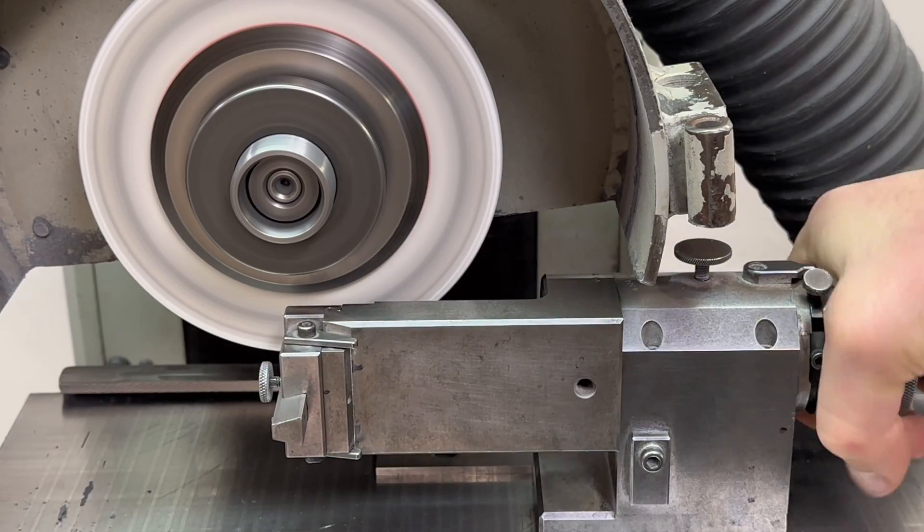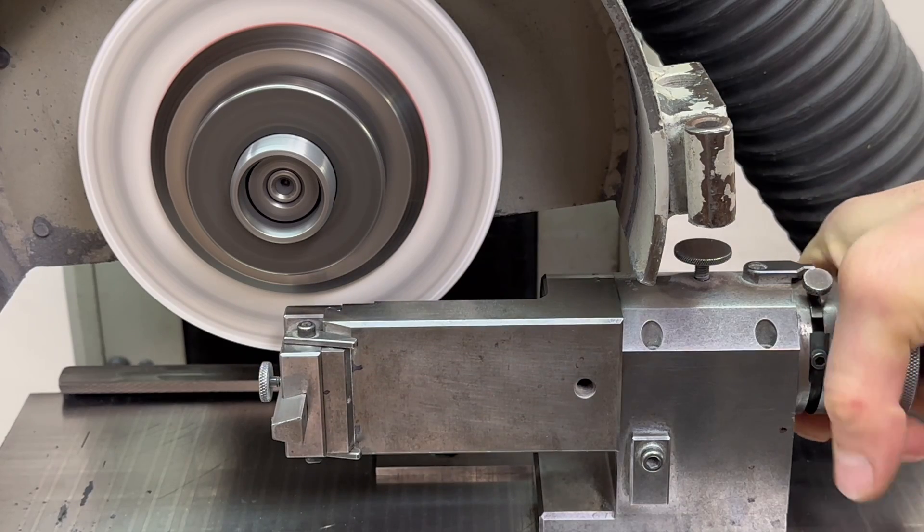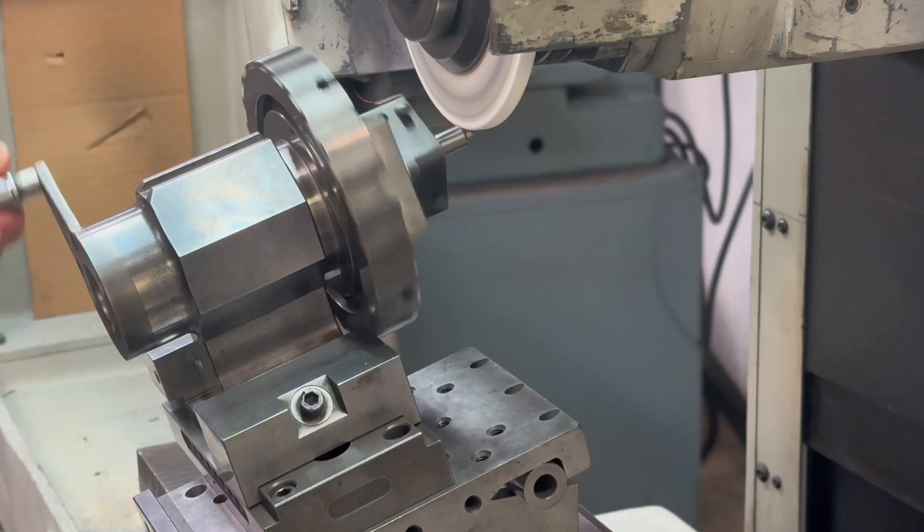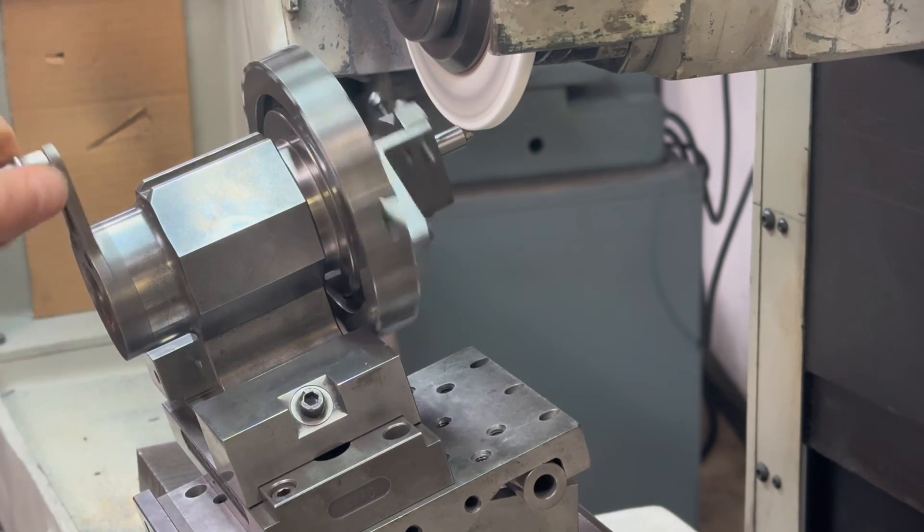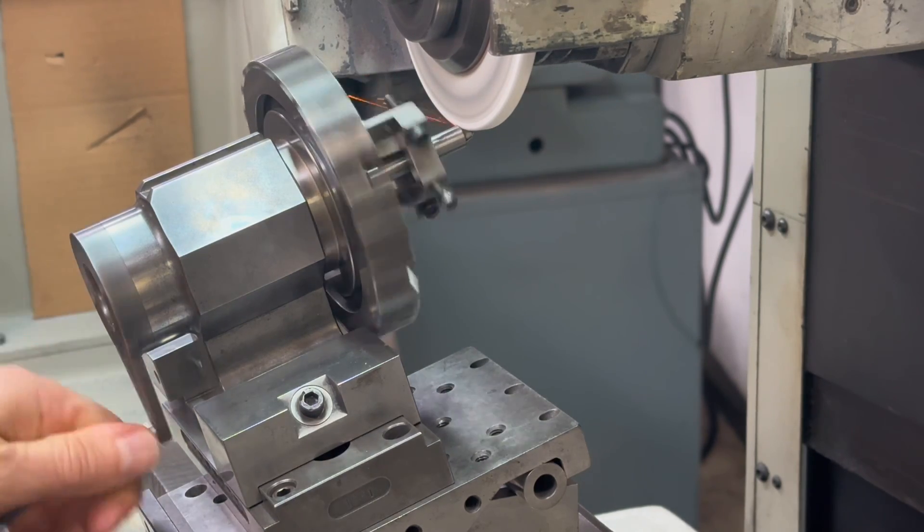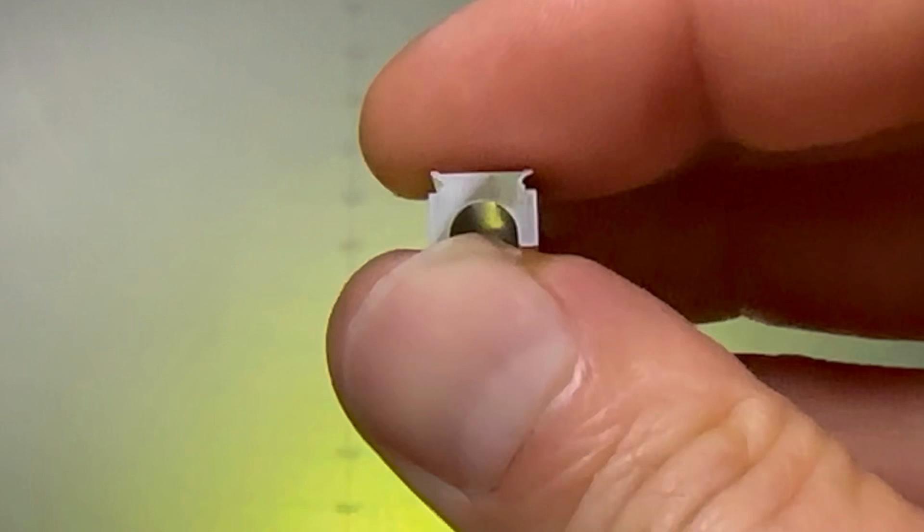Punches were all finished ground with a manual surface grinder. Every angle, radius, and cut was meticulously ground without the help of any type of CNC machine. Here is one such punch that was made on a manual surface grinder for this die.